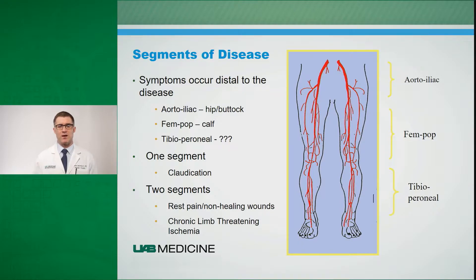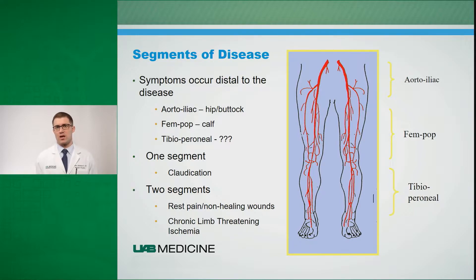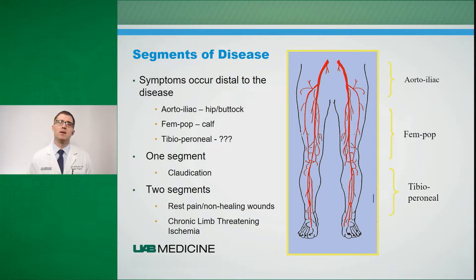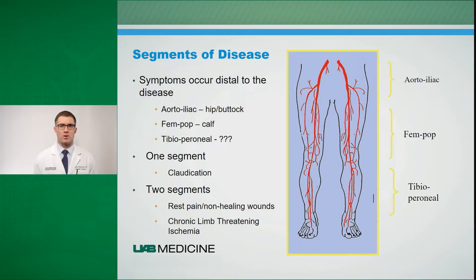Patients with isolated disease within one segment of the arterial tree will be the ones that complain of claudication, whereas those that develop severe two-segment disease, for instance in the aortoiliac segment or the femoral popliteal segment, will be at high risk for developing chronic limb-threatening ischemia.